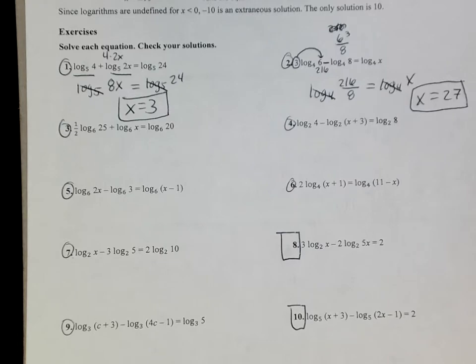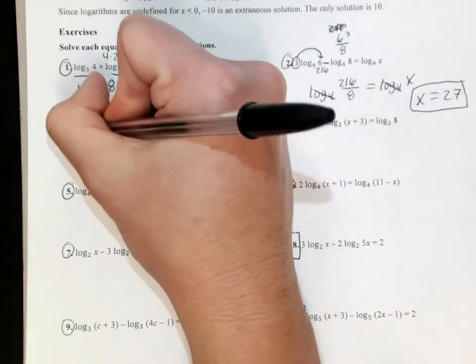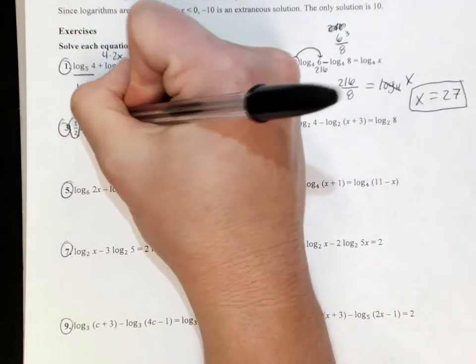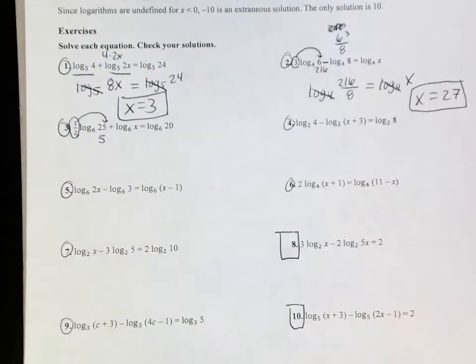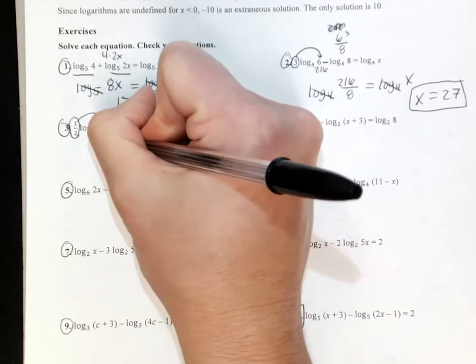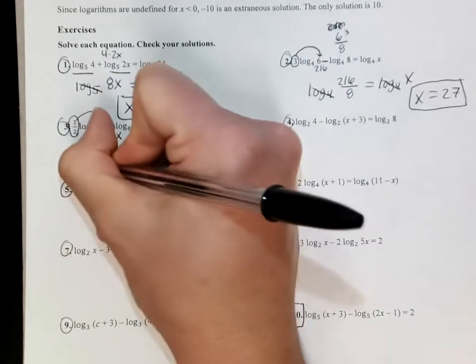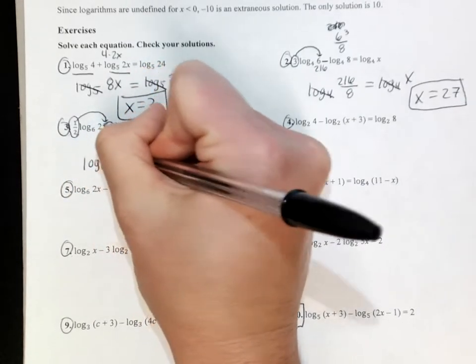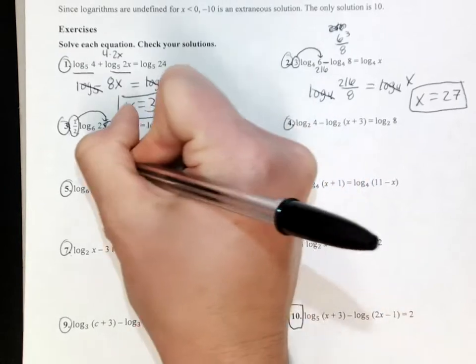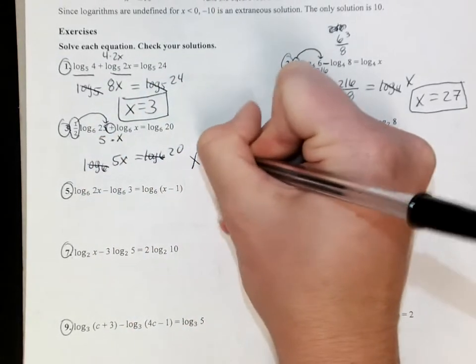Same thing here on the next one. You've got to put all this together. The first thing you want to take care of are your things in front. Those become exponents. 25 to the 1/2 power is just 5. Because these two logs are added, then I'm going to multiply my insides together and get that this is log₆ of 5x equals log₆ of 20. Again, the logs cancel out. I solve that. I get x equals 4.